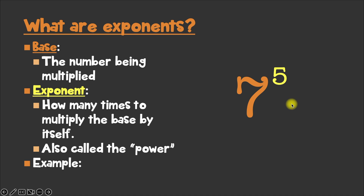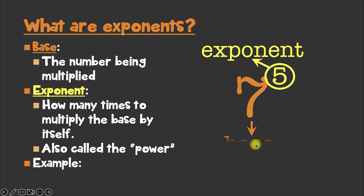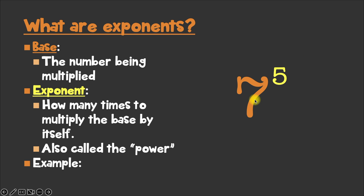Here's our third example: 7 to the fifth power. What's our base here, and what's our exponent? Let's start with the number written in a smaller size in the upper right corner — that is our exponent, which means that the number written bigger here is our base. And what do you think this means, 7 to the fifth power? In other words, what would the expanded form be?